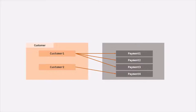One customer can have multiple payment methods, but two customers cannot have the same payment method. This is one example of a one-to-many relationship, and it is one such scenario where we can use embedded documents for creating this one-to-many relation.